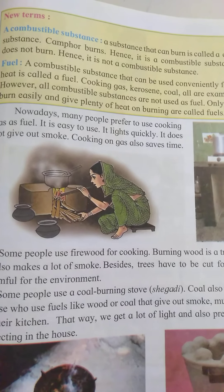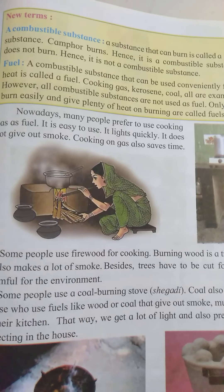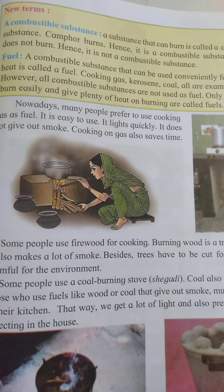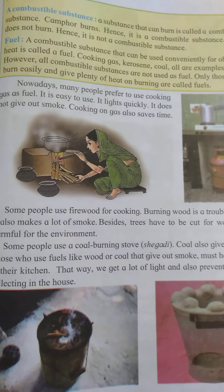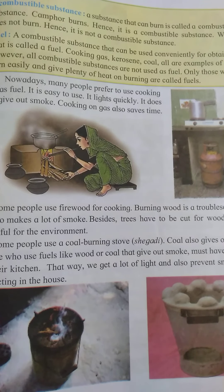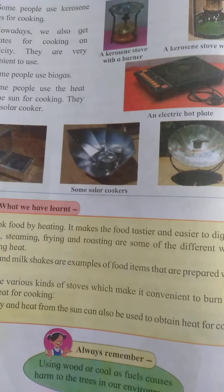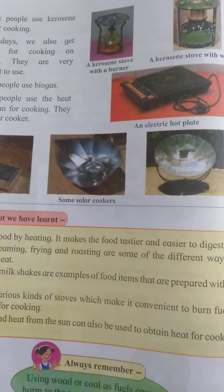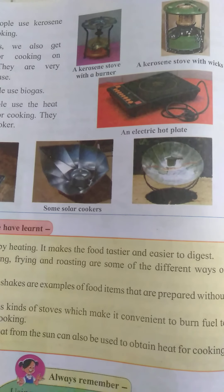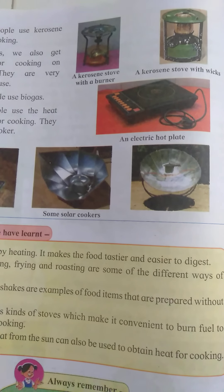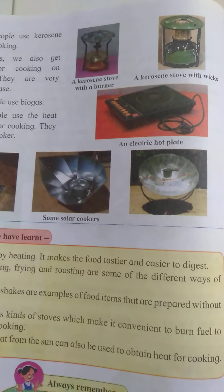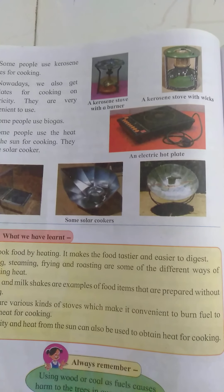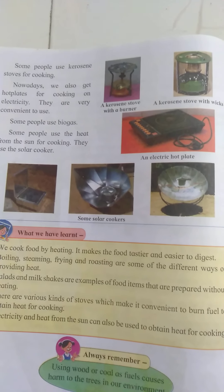Children, do you know it's not good to cut down trees? We need forests to live. Next one is the solar cooker. We can use solar cookers, which work on the heat of the sun. The sun has a lot of heat and light to give us, and we can use it all we want.